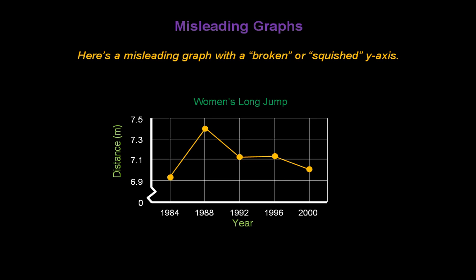Here's another misleading graph with a broken or squished y-axis. This shows the women's long jump, with distance on the vertical axis and four-year increments on the horizontal axis. Because of the squished axis, the very first interval represents 6.9 meters while all the other intervals represent just 0.2 meters. Because of that, it looks like there was a huge difference in the women's long jump distances between 1984 and 1988.